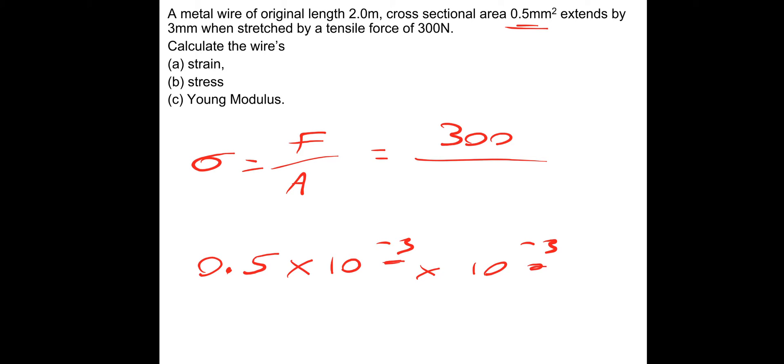We just need to add these. So 0.5 times 10 to the minus 6, and then calculate this bit, the 300 divided by 0.5 times 10 to the minus 6. Gives a stress of 600 megapascals.